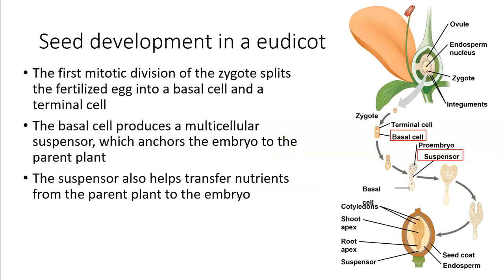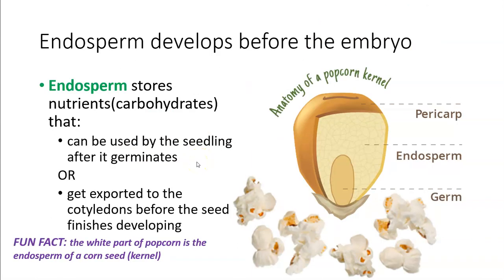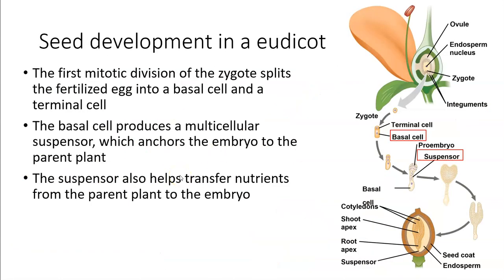Now I want to go back to look at how the process occurs in general — from this early stage where you see mostly endosperm and the germ hasn't yet differentiated into the different structures that will become the roots, the shoots, the leaves, etc. We're going to look at that through the scenario for a eudicot, how the seed develops from young to mature, and then take a look at the eudicot mature seed.